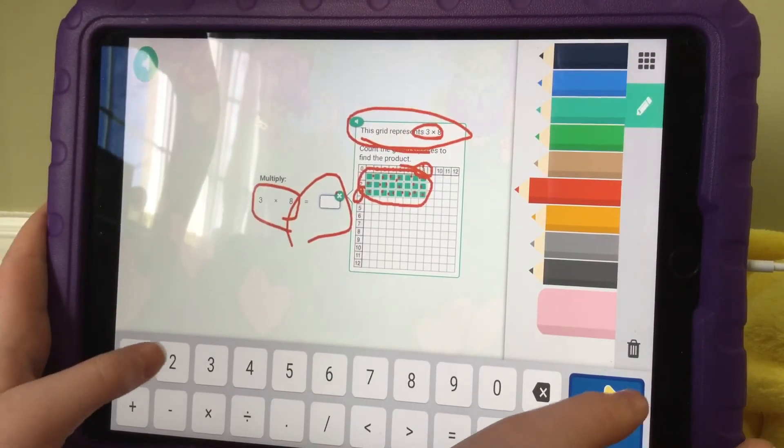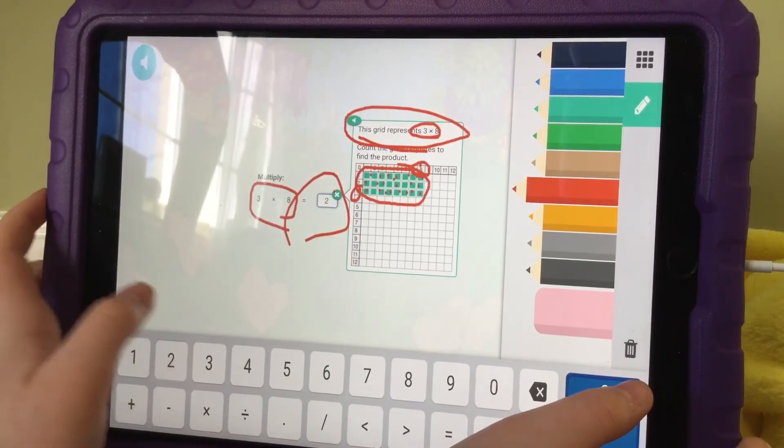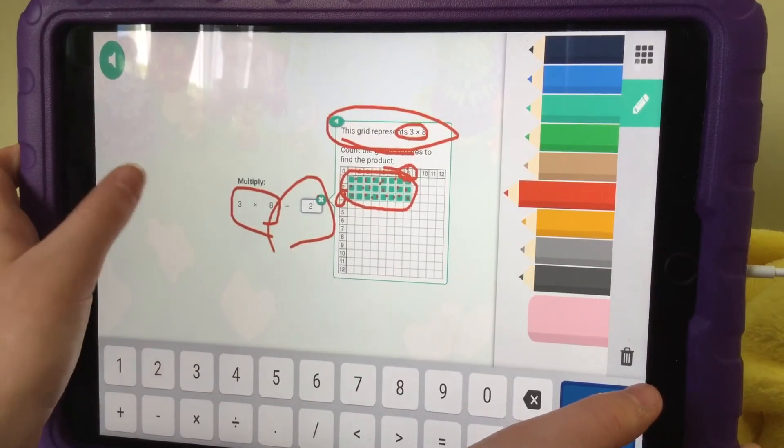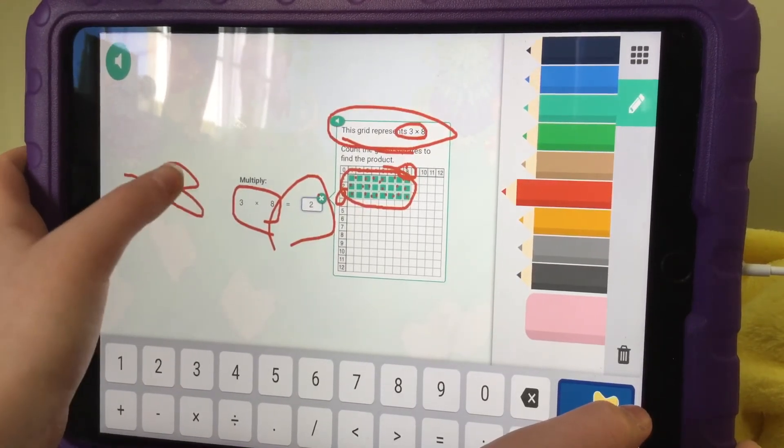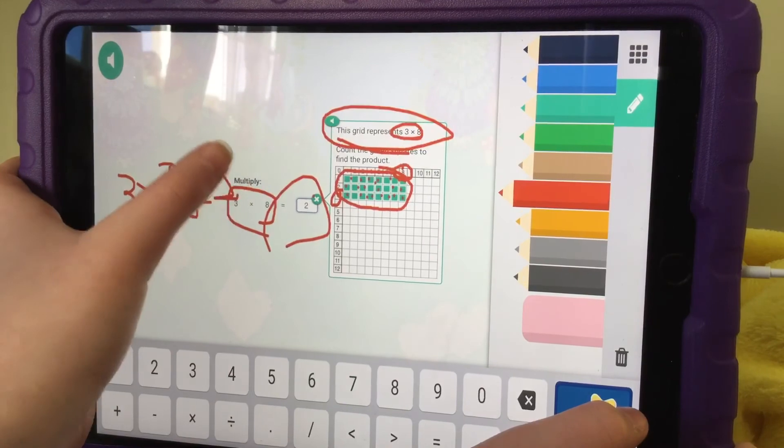24. So the answer to this equation, the answer to 3 times 8 equals 24.